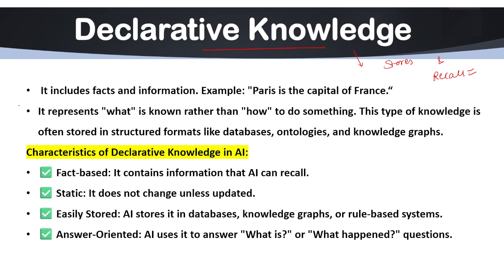Declarative knowledge includes facts and information. For example, Paris is the capital of France, or New Delhi is the capital of India. This is information that we are sharing — it is a fact that we all know. That is called declarative knowledge.